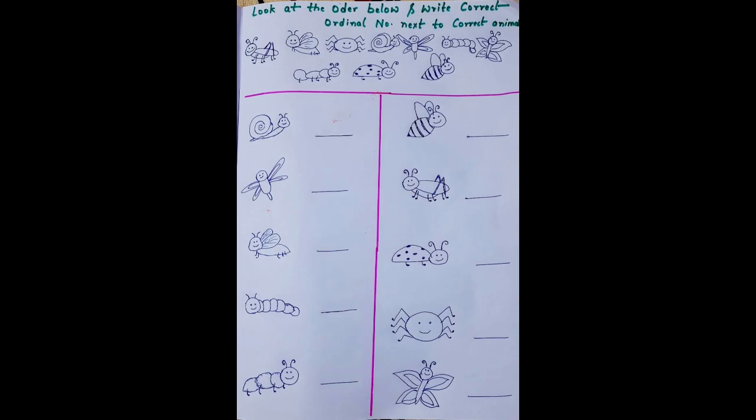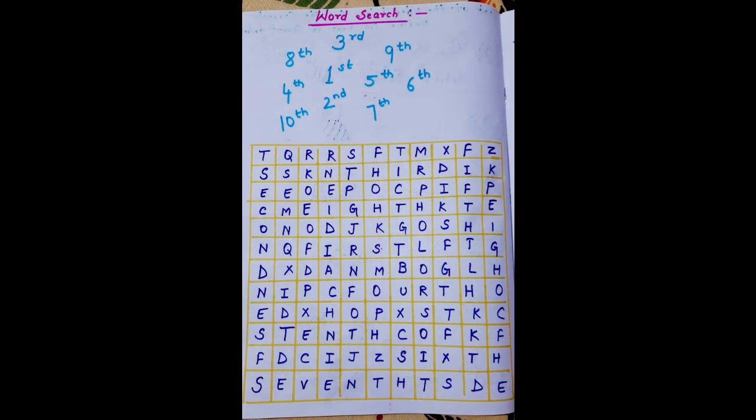For example, there are some animals drawn — the first one is a grasshopper. The kid will figure out that the grasshopper is in the first position and write the ordinal number 'first' there. The same way, they need to check all the animals, find which position each is in, and write the corresponding ordinal number.